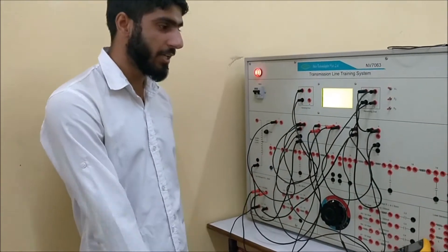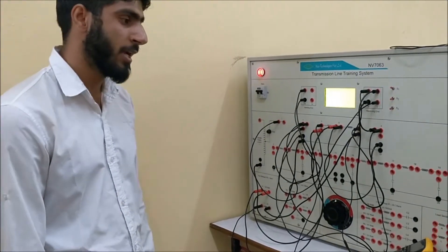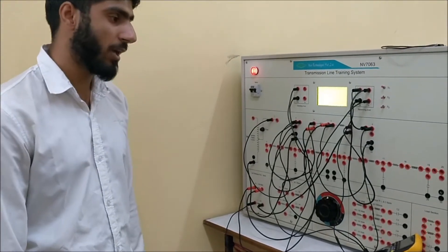The voltage equation is Vs equals A times Vr plus B times Ir, and Is equals C times Vr plus D times Ir.